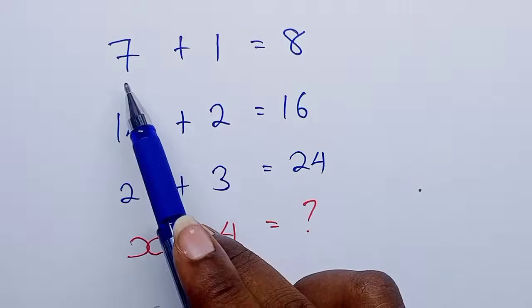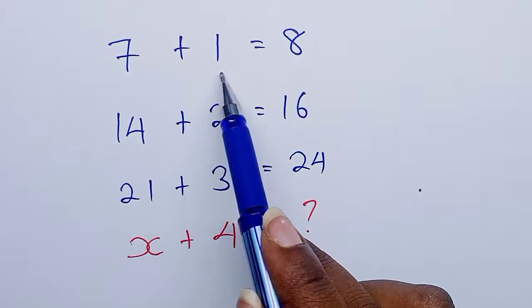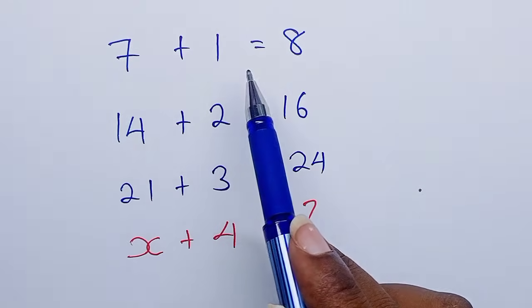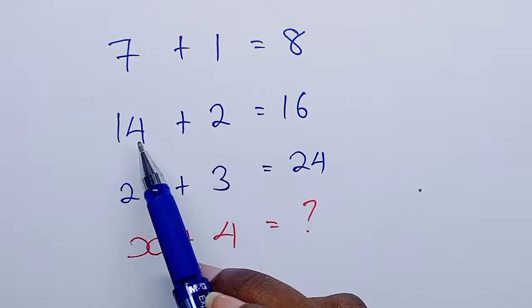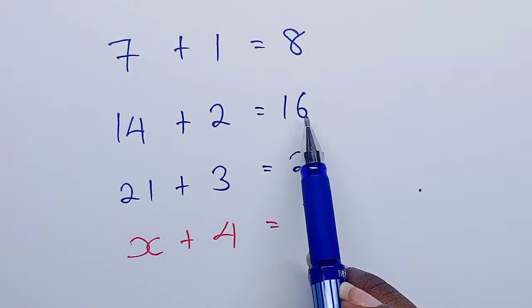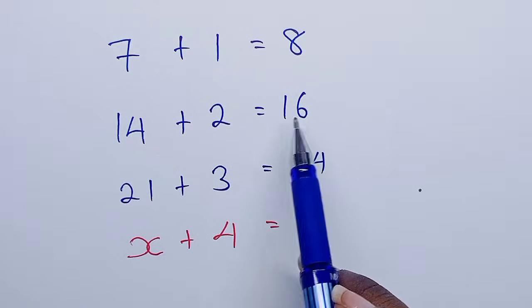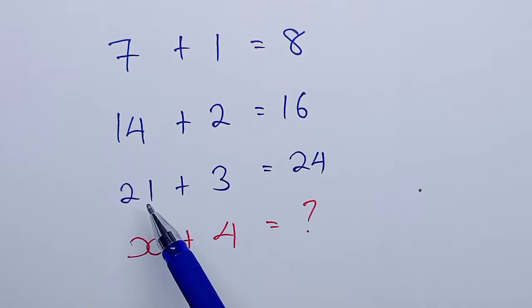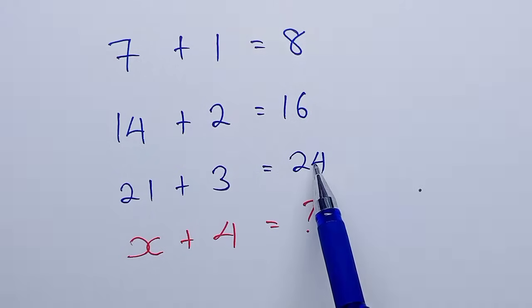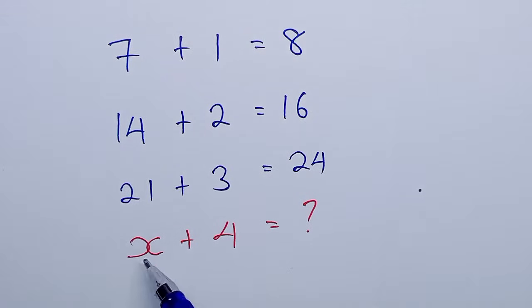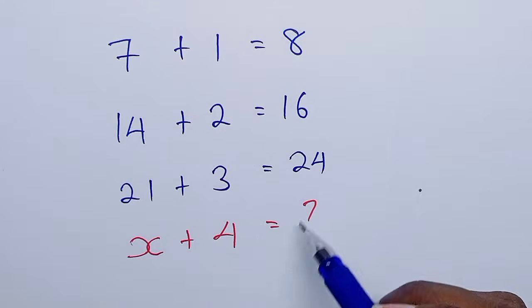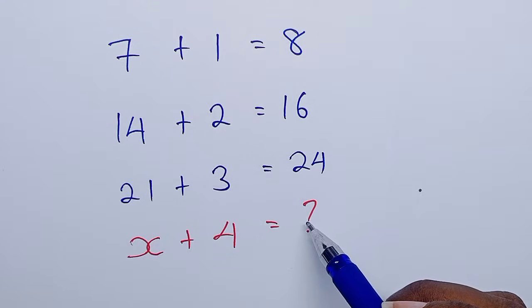Indeed, 7 plus 1 is actually 8, so it's a correct addition. 14 plus 2 is actually 16. 21 plus 3 is actually 24. So that means we have to find the right value here that you can add to 4 and get the correct value.